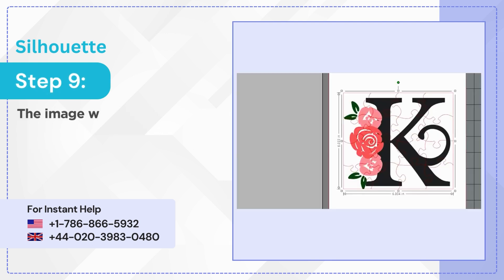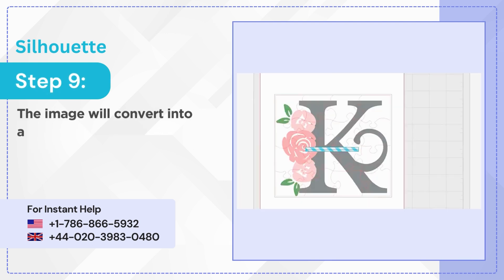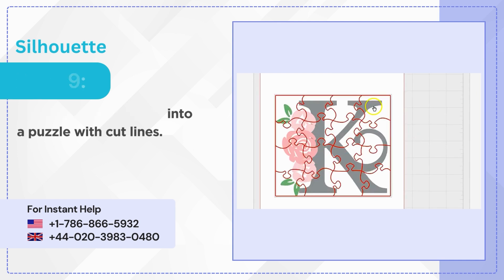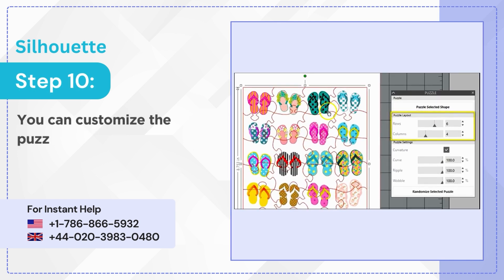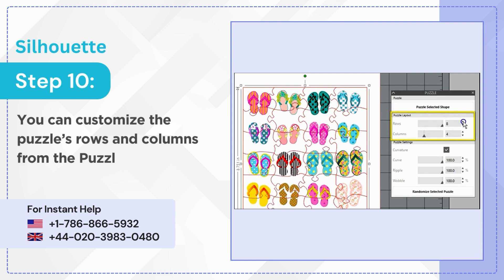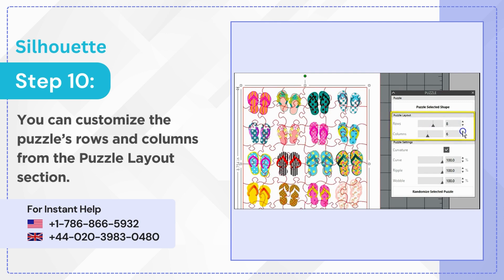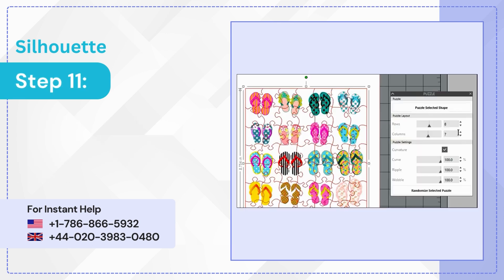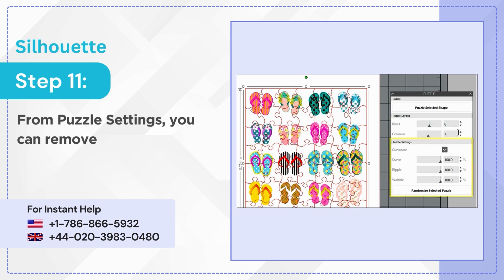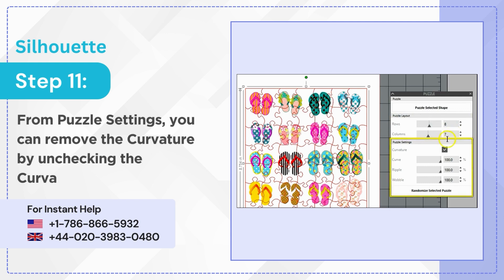Step 9: The image will convert into a puzzle with cut lines. Step 10: You can customize the puzzle's rows and columns from the Puzzle Layout section. Step 11: From Puzzle Settings, you can remove the curvature by unchecking the curvature checkbox.